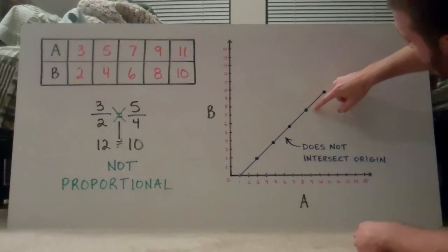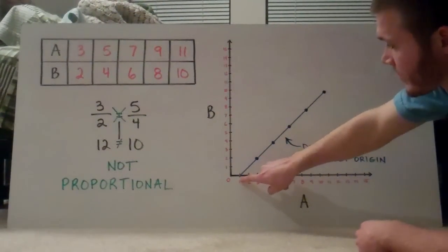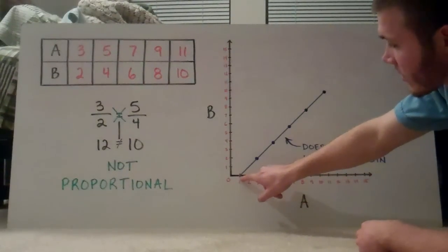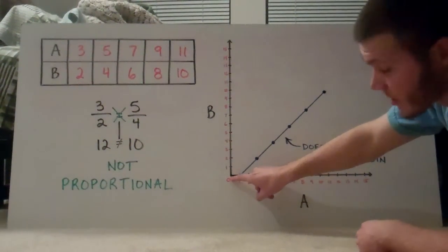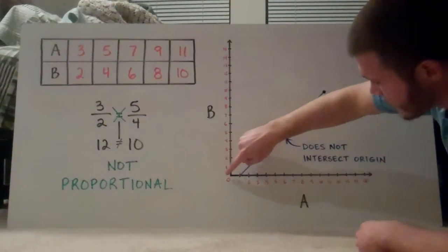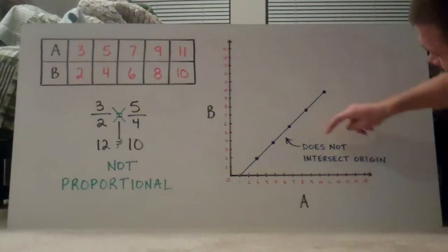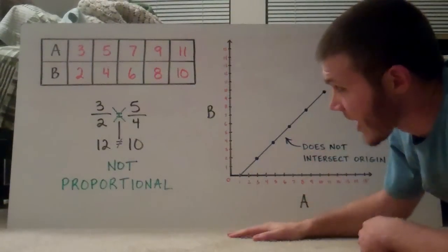So I connected all of these points and the line ended up stopping right there, right on where a is 1. But this right here, class, that's the origin, 0,0, where this axis value is 0 and this axis value is 0. It does not intersect the origin. Therefore, these values are not proportional.